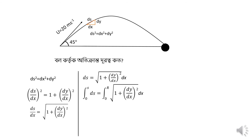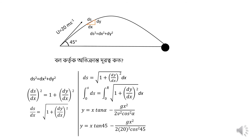Let us note that y is equal to x·tan(α) minus g·x² divided by 2v²·cos²(α). Substituting v equals 20 m/s and α equals 45 degrees, this simplifies to y equals x minus 0.0245·x².